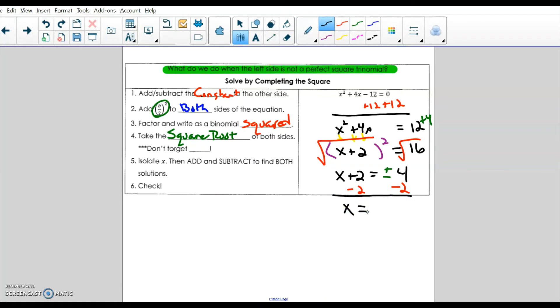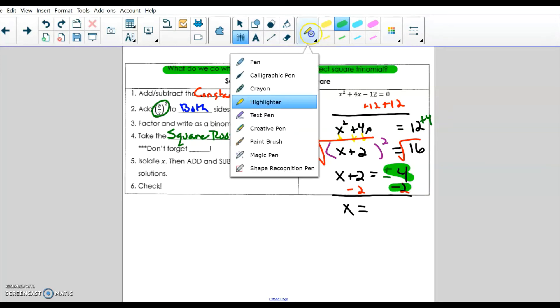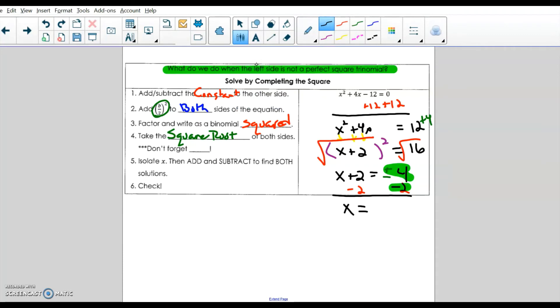So the final step in solving this equation is to subtract 2. x equals, there's two different things going on here. There is positive 4 minus 2, which is, so positive 4 take away 2 is 2. And then there is the negative 4 minus the 2, which gives us a second answer of negative 6. And those are the two answers for that completion square root.